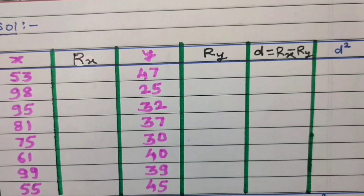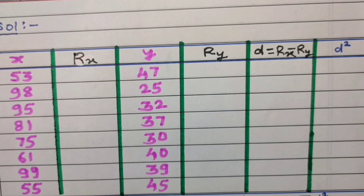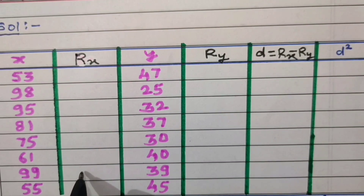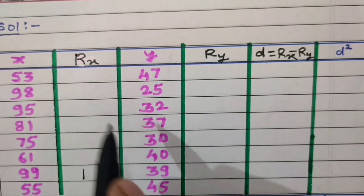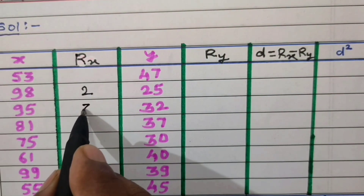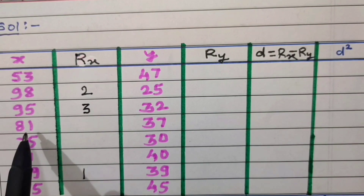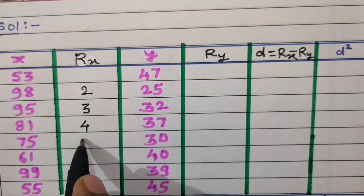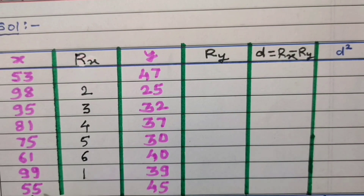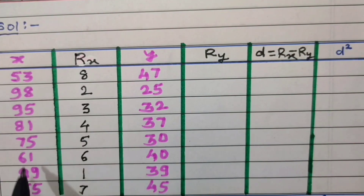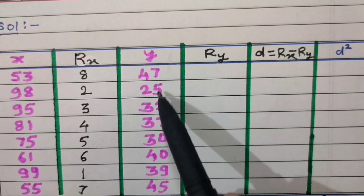We give rank 1 to the largest value of x, which is 99. Then rank 2 to 98, rank 3 to 95, rank 4 to 81, rank 5 to 75, rank 6 to 61, rank 7 to 55, and rank 8 to 53. No value of variable x is repeated.